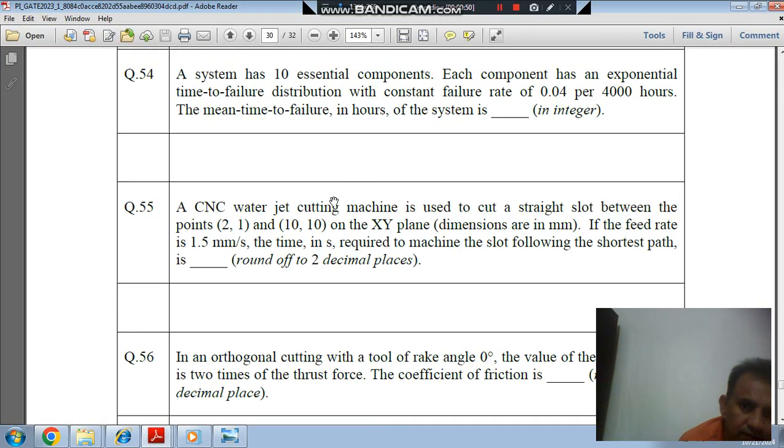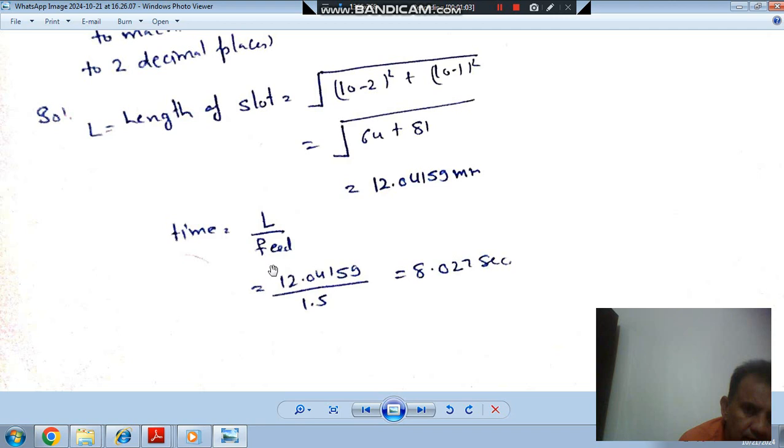As final coordinates are (10,10) and initial coordinates are (2,1), the difference of x coordinates is 10 minus 2, and difference of y coordinates is 10 minus 1. So, the distance between these two coordinates is square root of (10-2)² plus (10-1)². This will be 12.041599 mm. So this is the length of the slot.